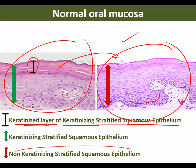This is the basal layer. If the basal cells increase, it is dysplasia.